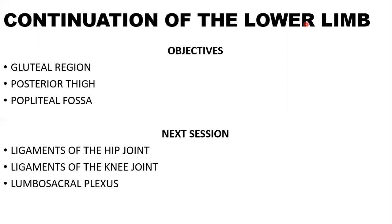For this video we are going to look at the gluteal region and the structures found there, and we'll look at the posterior side including the popliteal fossa. For the next session we'll conclude on the thigh and pelvic region — looking at the ligaments of the hip joint, the ligaments of the knee joint, and the lumbar sacral plexus, which is the innervation of the pelvic region and lower limb.